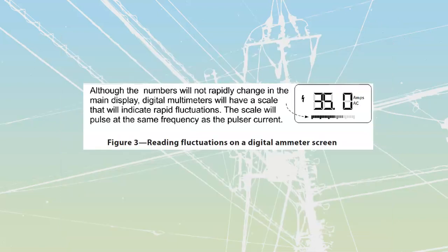Analog meters work great for this, but the problem is a lot of analog meters are delicate and non-existent for most of you. Digital meters are going to have a bar either across the bottom or top of your screen that will show pulsations and be able to pick this up. You're going to see that bar tick, tick, tick as you read the pulsation, and as soon as you go past the fault, all of a sudden the bar is going to be hovering in one spot.